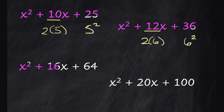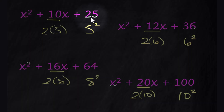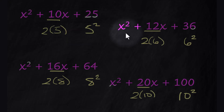Looking at x² + 16x + 64: 64 is 8 squared, and 16 is 2 times 8. And for the last one, you probably see the pattern already — 10 squared is 100, and 20 is 2 times 10. So in these perfect square trinomials, the last term is a number squared, and the middle term is that same number times 2.